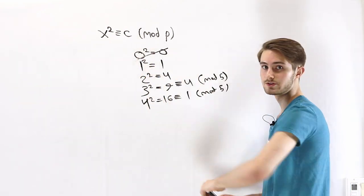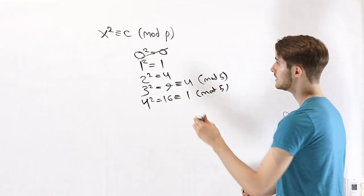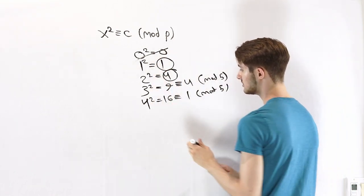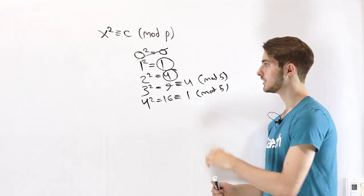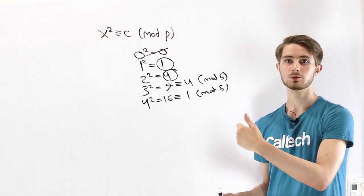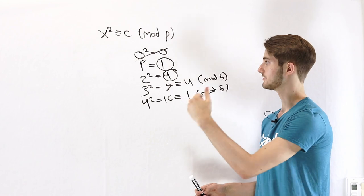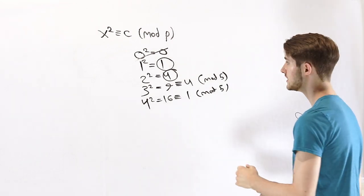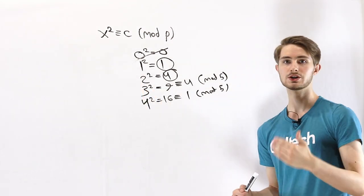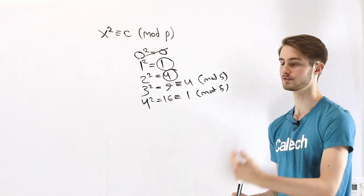We don't usually count 0 as a quadratic residue, but we do count the other integers. In this case we see that 1 and 4 are the only integers that we can get when we square another integer mod 5. On the other hand, the other residues 2 and 3 would be quadratic non-residues mod 5.